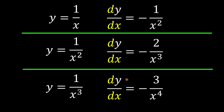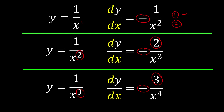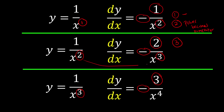I observe that all of the derivatives of these reciprocal functions are negative — that's my first observation. The second thing I realized is: whatever the power of our original function is going to be the numerator of the derivative function. So the power becomes the numerator. The third thing I realized is that all the powers increase by 1 — can you see that? 1 becomes 2, 2 becomes 3, and 3 becomes 4. So we know the power is going to be increased by 1. Those are the 3 patterns I observe.